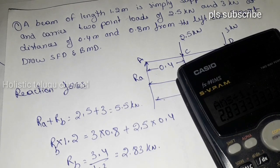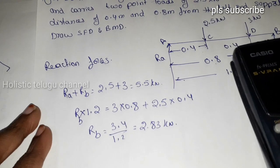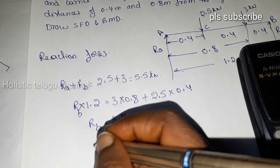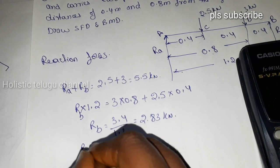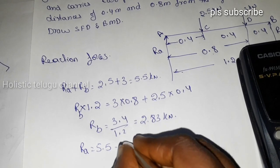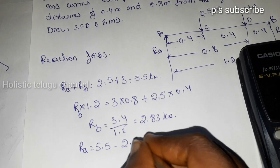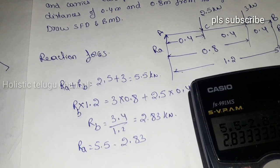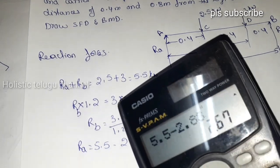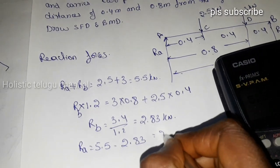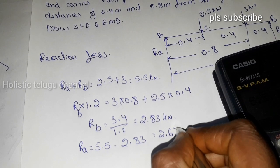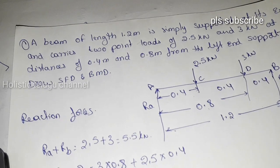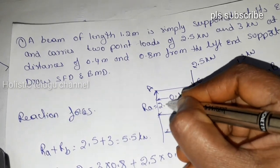Ra equals total load minus Rb: 5.5 minus 2.83, which equals 2.67 kN. So Ra = 2.67 kN and Rb = 2.83 kN.